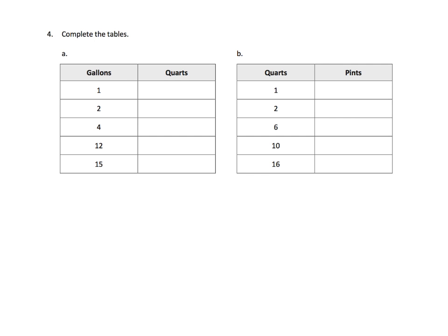Just quick conversion tables, right? So remember, one gallon is equal to four quarts. So our conversion, we're going to multiply by four. Anytime you have your gallons, you just have to multiply by four, and that gives you your quarts. So two times four gives us eight. Four times four, four gallons times four gives us 16 quarts. Twelve gallons times four gives us 48. And then lastly, 15 gallons times four gives us 60.